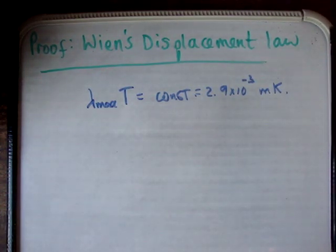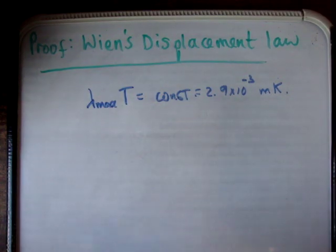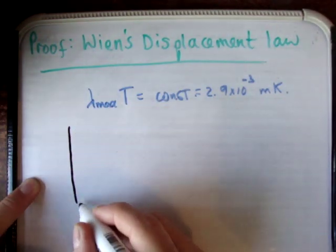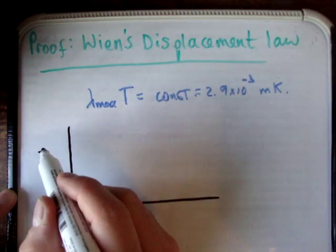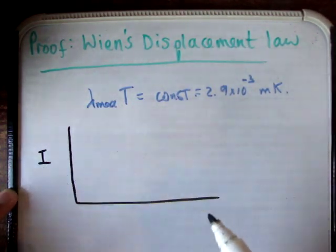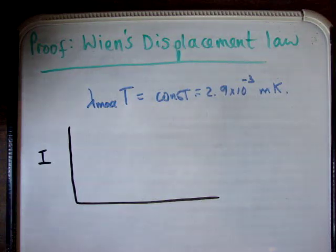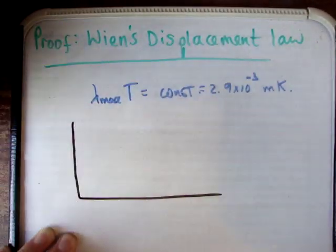Now, what that physically means is that if you have a blackbody curve, alright, and on the blackbody curve you might have your, we'll say an energy density, it doesn't really matter. So I'm going to say U is equal to energy density.